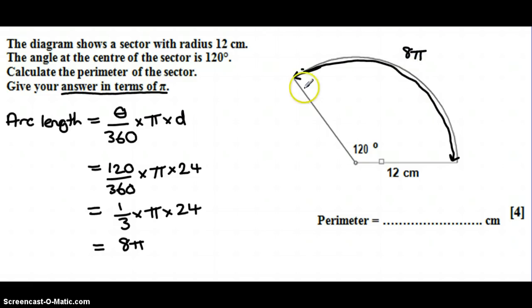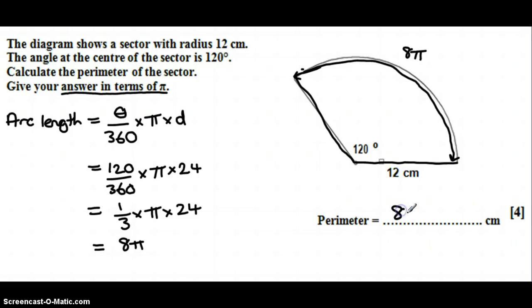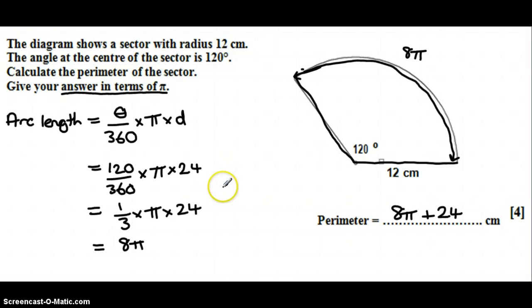To find the perimeter we need to include the two straight lines, which are basically the radii of the circle. So we have 8π and then 2 lots of 12, which gives us 24. That will get you the full marks.